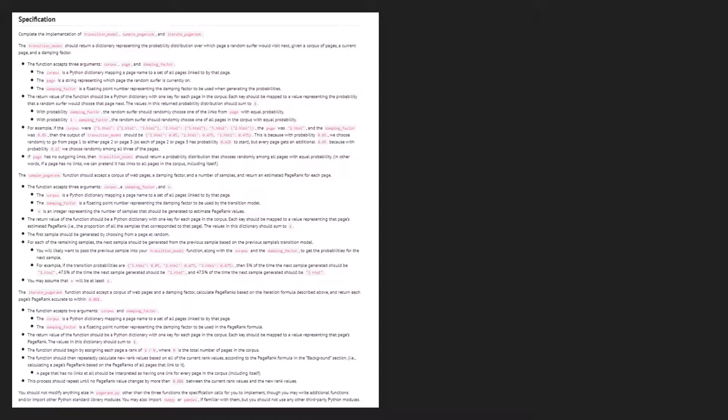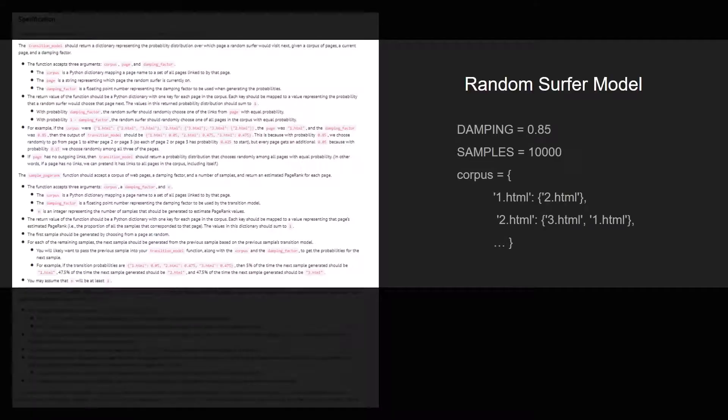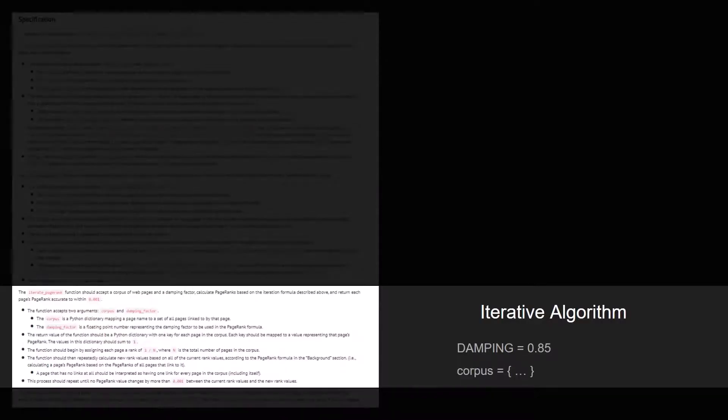So from the specifications we know that the first part corresponds to the random surfer model which includes a damping factor of 0.85 and 10,000 samples, and also a corpus which is a dictionary that determines the respective web page and its links to another page. And the second part of the specification corresponds to the iterative algorithm which also includes a damping factor and a corpus.